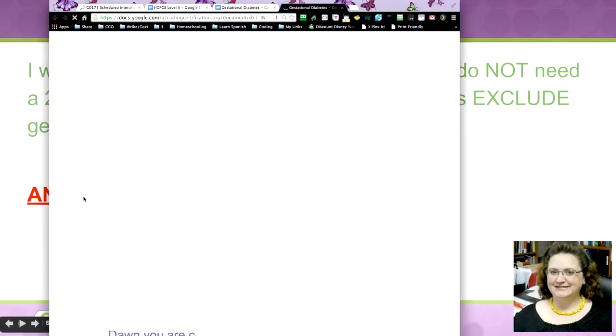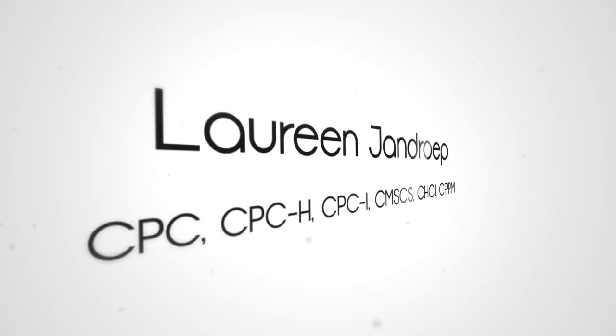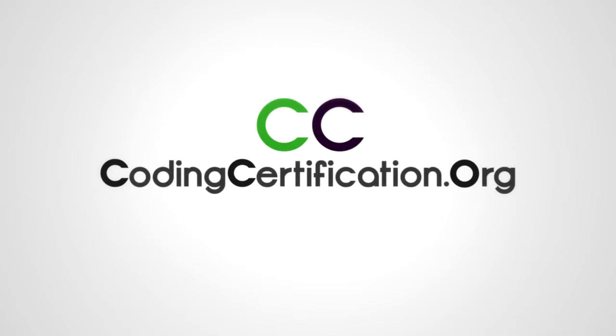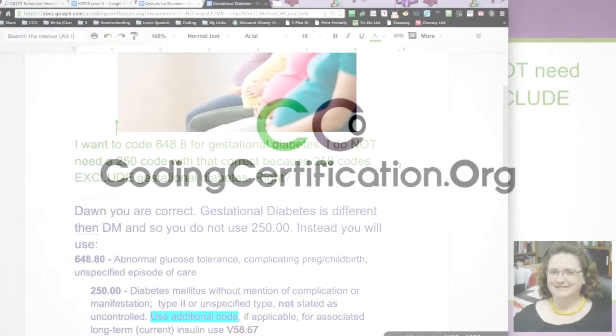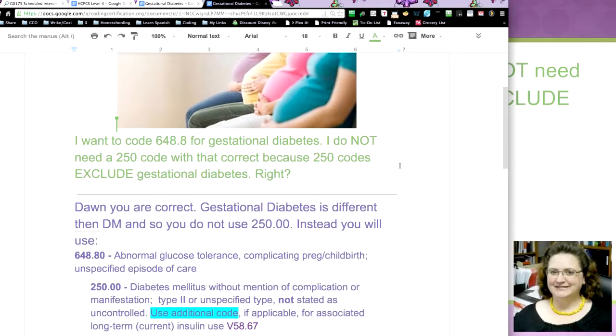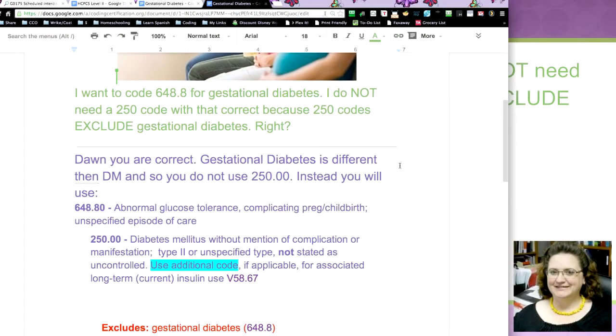And she's right. So, 648.8 is the code for gestational diabetes. If you look at 648.80, abnormal glucose tolerance, complicating pregnancy or childbirth, unspecified episode of care.